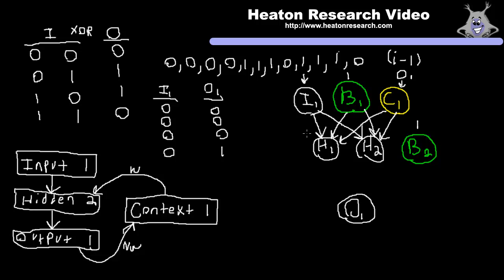We have six weights on the first synapse connecting the input layer, its bias, and the context layer to the hidden layer. Then to the output, the hidden layers flow forward, giving three more weights. That is the basic structure of the Jordan neural network. To calculate values, we calculate just like a feedforward neural network, because we've flattened it to a feedforward structure. We calculate Hidden 1 first, then Hidden 2, and finally Output 1 using those two values.